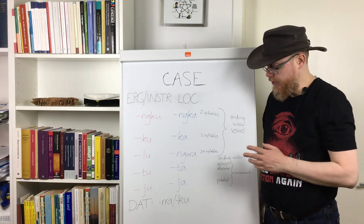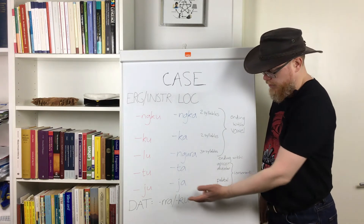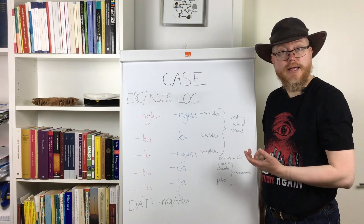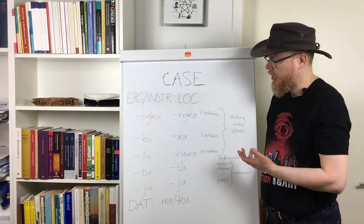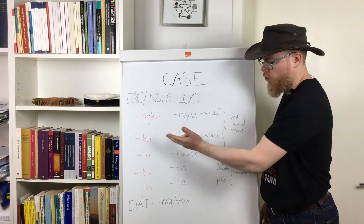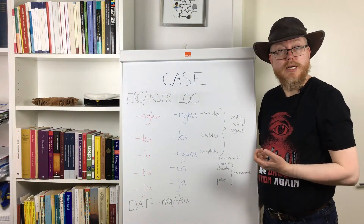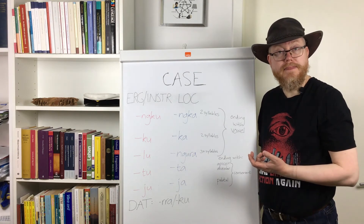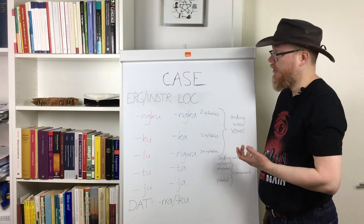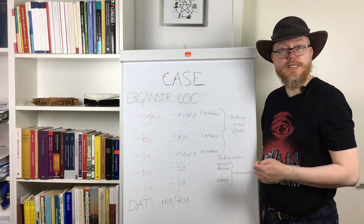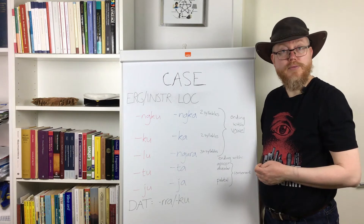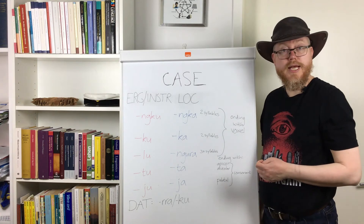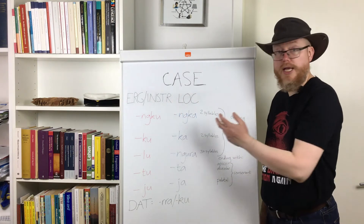So you see there is no risk of confusion between dative 'gu', which attaches to nouns that end in a consonant sound, and ergative 'gu', which attaches to disyllabic nouns that end in a vowel. I have also written 'instr' there, which stands for instrumental case, meaning that these suffixes also mark instruments.